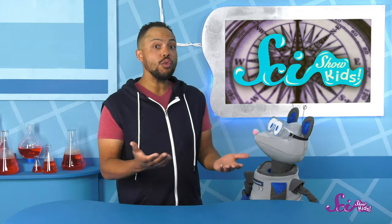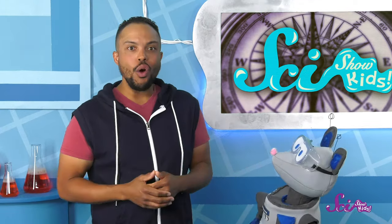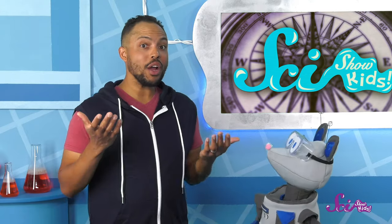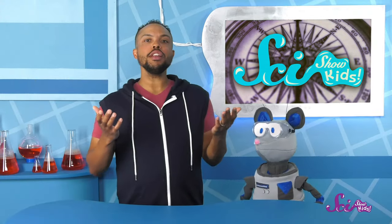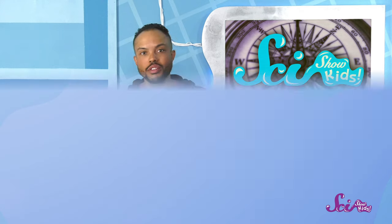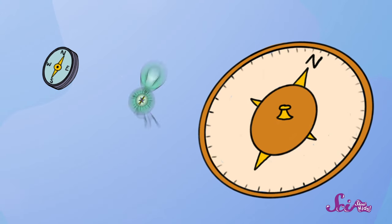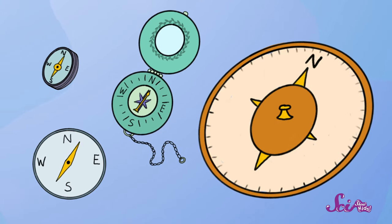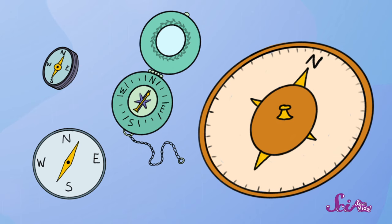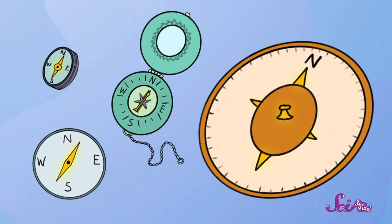A compass is a tool that can tell you what direction you're going. And if you know what direction you're going, you can find your way around without getting lost. People have been using compasses for thousands of years to explore the world. They can be big or small, fancy or plain. But they have an important thing in common. They have some kind of arrow or needle that points north.